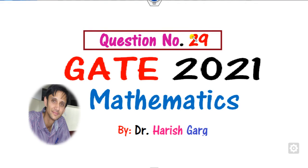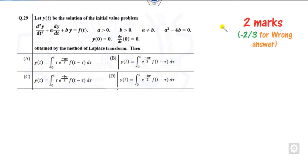Hello students, welcome to this question number 29 which was asked in the GATE 2021 mathematics. This question is worth two marks and if you get a wrong answer then you will get a deduction of minus 2/3. This is a question related to Laplace transformation about an initial value problem and you have to find which option is the right one.